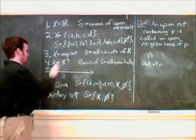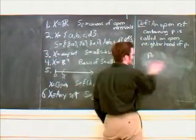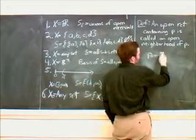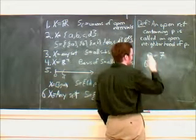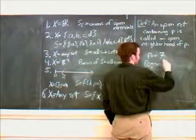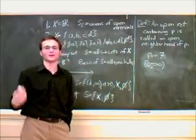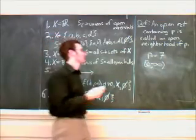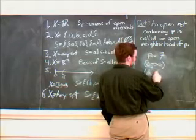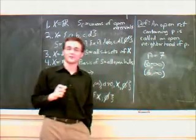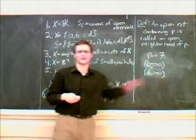In the fifth example, we have a line. If our point is seven again, some open neighborhoods at this point are zero to infinity, because that is an open neighborhood for every point in the set since it's the entire set. And another one: six to infinity is another open neighborhood of seven, and so on and so forth.